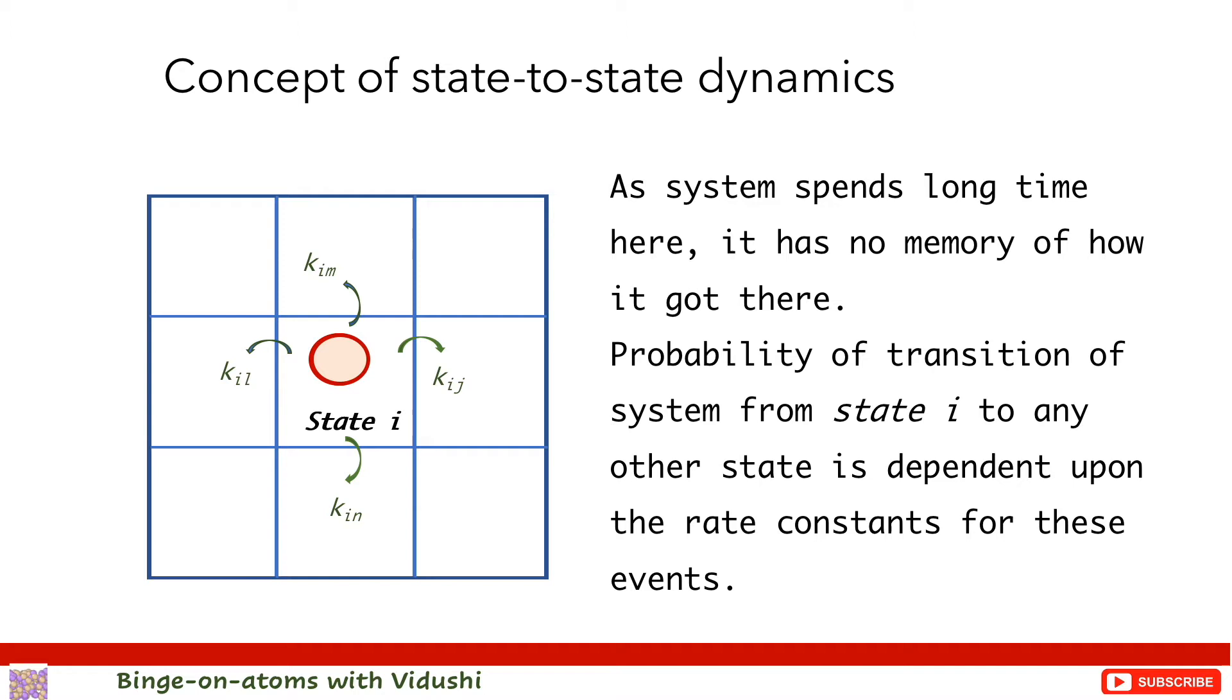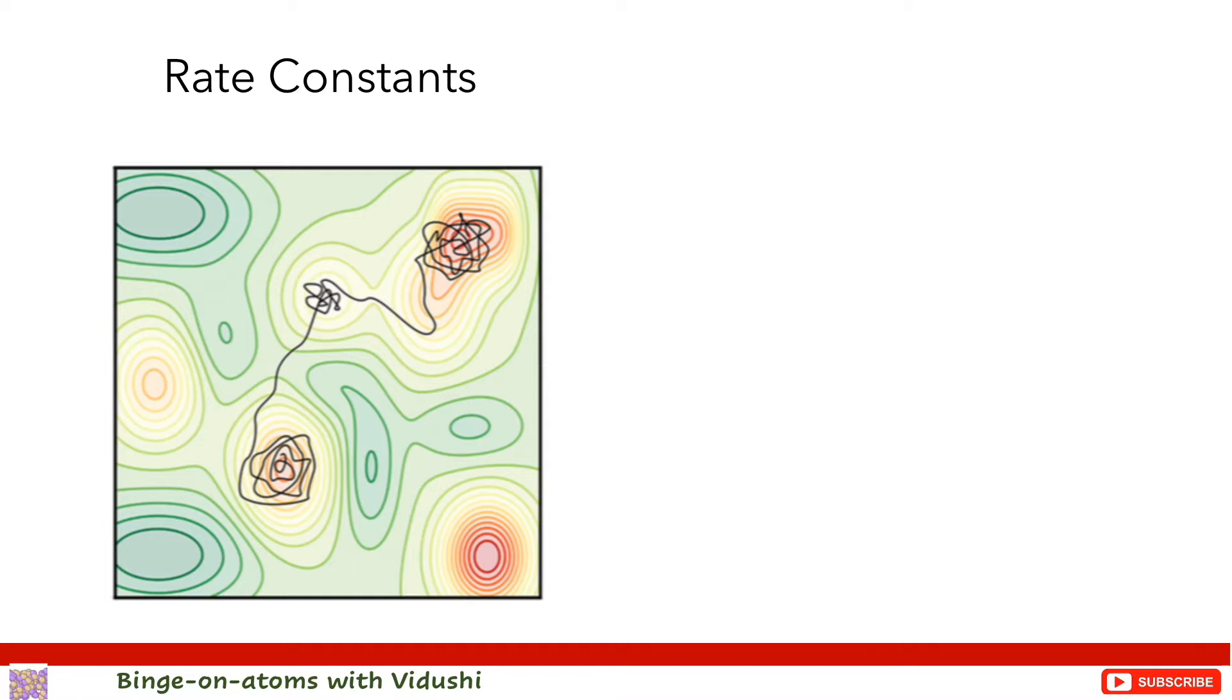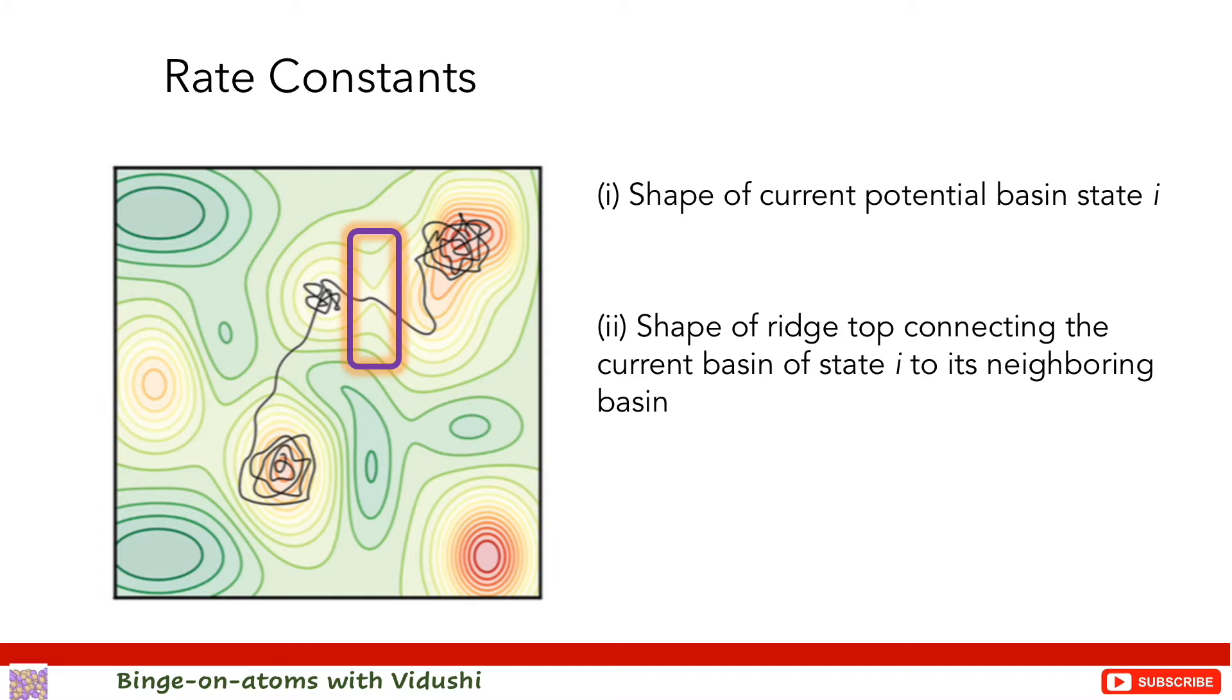So the system's probability to escape to a neighboring basin depends on the rate constants that characterize that probability. These rate constants are independent of what state preceded the present state. These rate constants are purely property of the shape of the potential basin of state i, the shape of the ridge top connecting state i to its neighboring state, and the shape of the next potential basin.